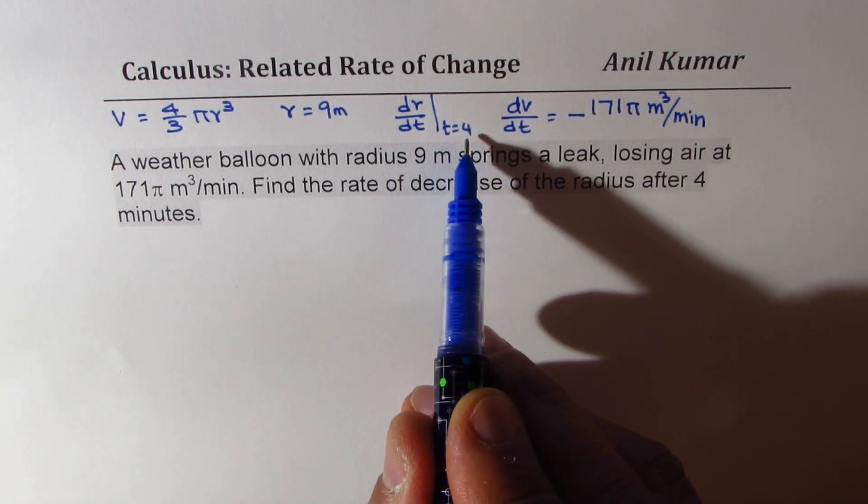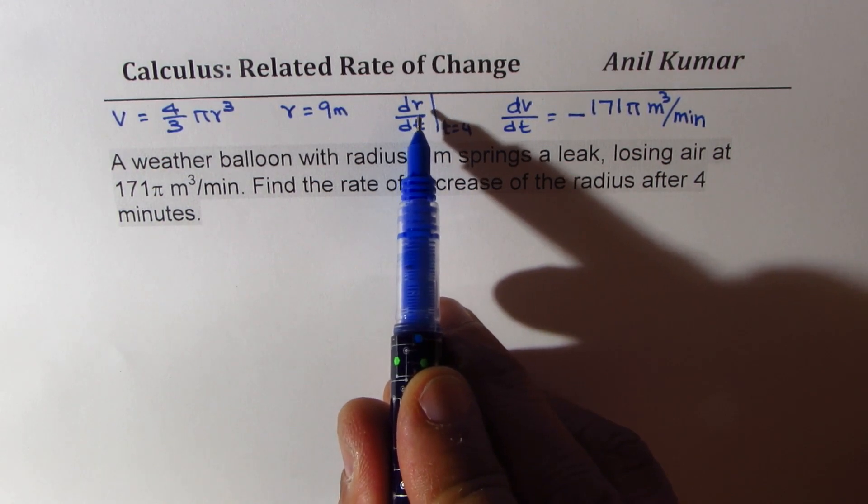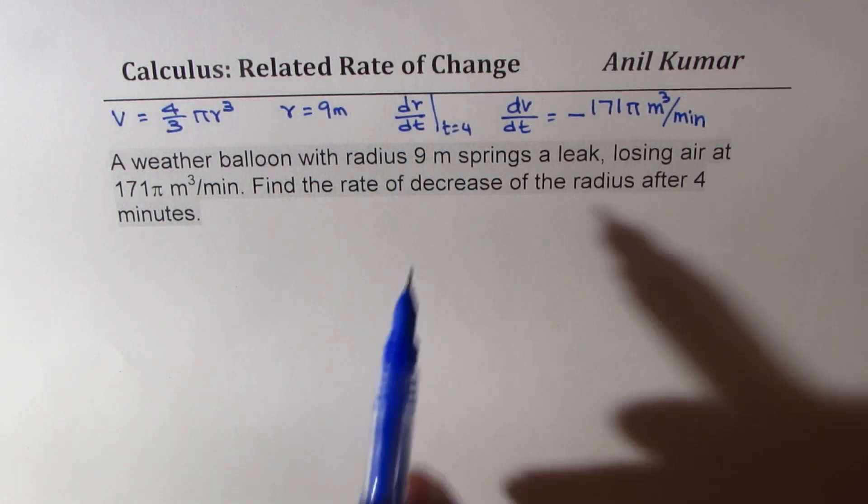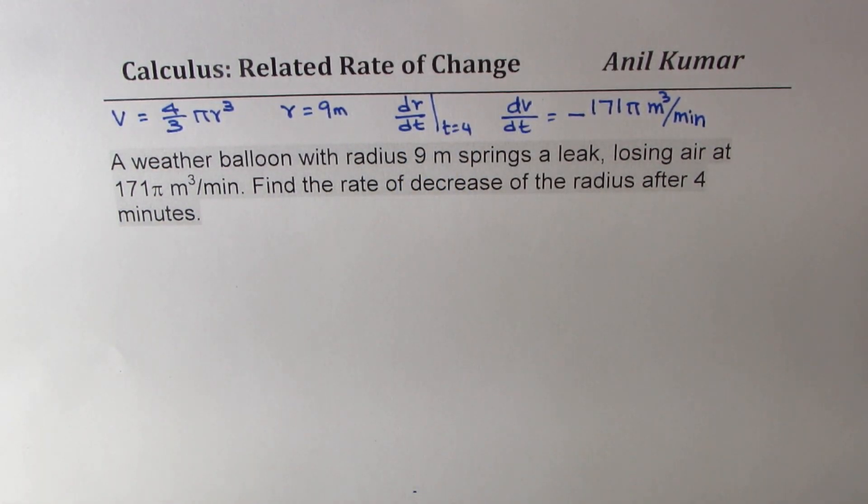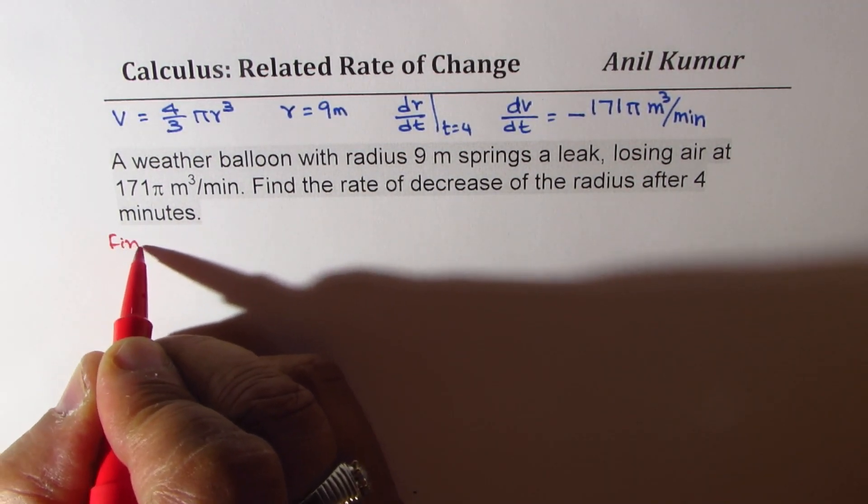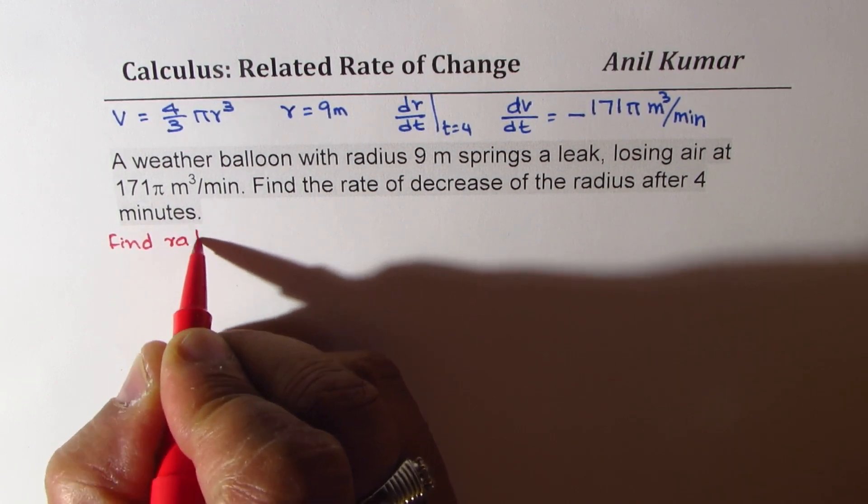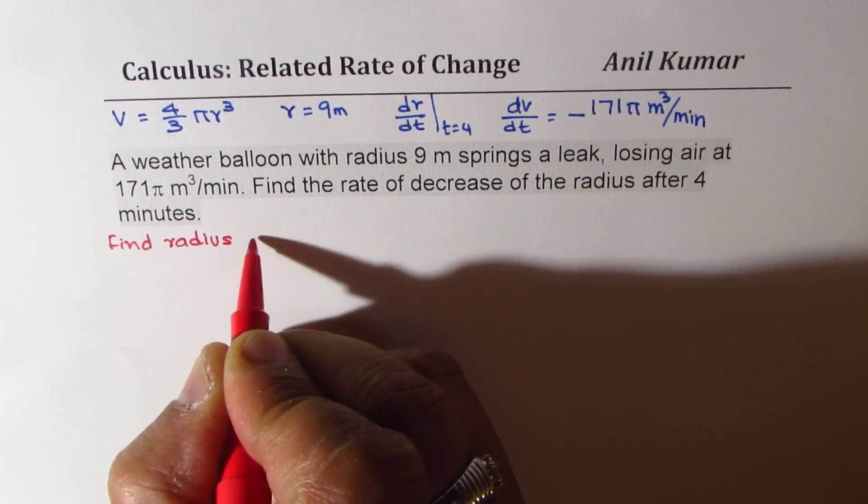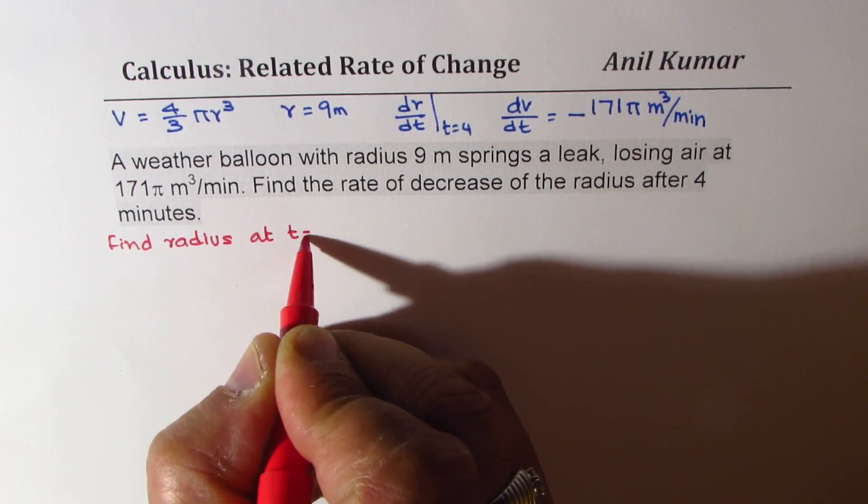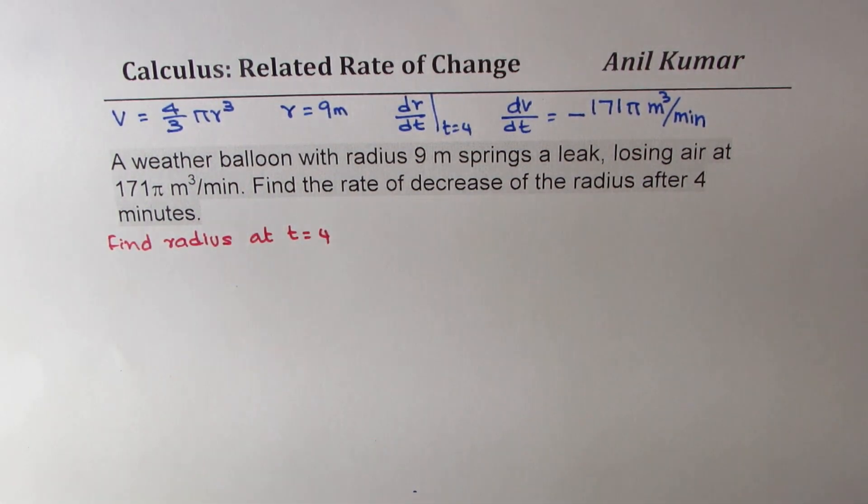Now to find this rate of change of radius when t = 4, we should know what the radius is at t = 4, right? So that is the first thing we should know. We'll begin to find radius at t = 4. That is the first part of our question.